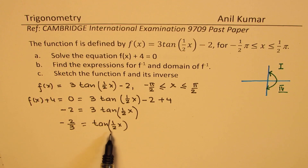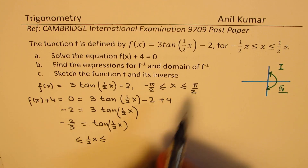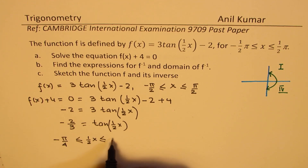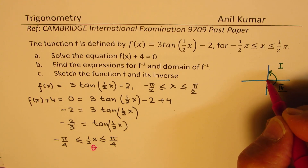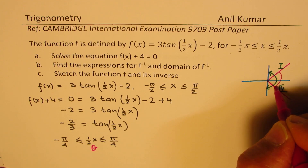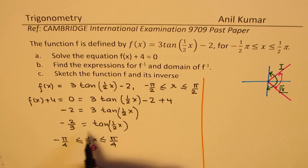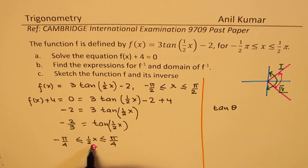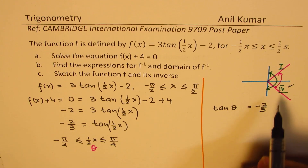It is important to understand that we are given the domain for x, but here we have x/2. So half of x should be within what interval? We'll multiply both limits by half, giving us minus pi by 4 to plus pi by 4. So we are looking for a solution for half x — let's call this theta — within the interval minus pi/4 to pi/4. We write tan(theta) = -2/3, and since -2/3 is negative, we are looking for a solution in quadrant 4.